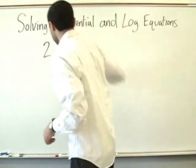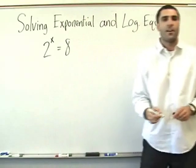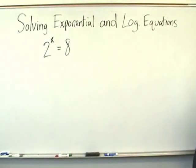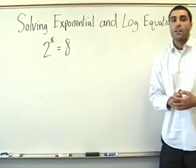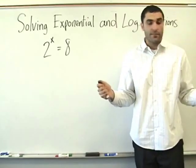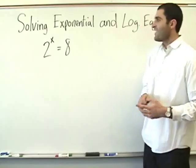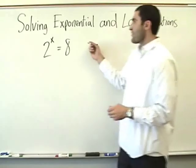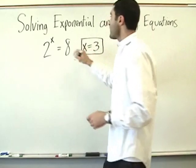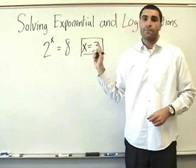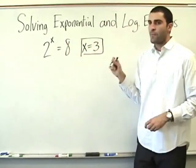Let's go like this. Here we go. 2 to the x equals 8. We're solving now. So, who knows what x is? 3. x equals 3. Because 2 times 2 times 2 is 8.